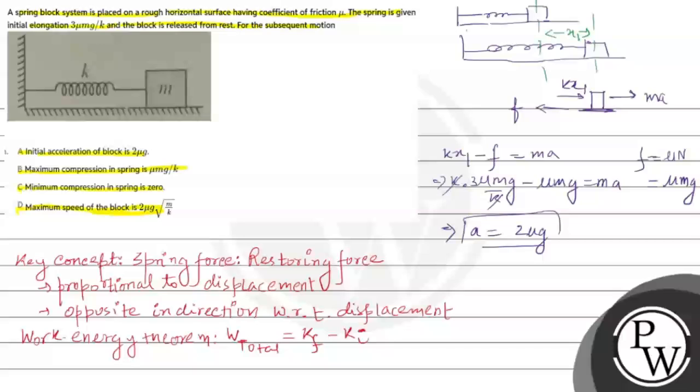So from here you can clearly say that option A is correct. Now let's see the second option, that is the maximum compression. After releasing the spring, suppose it is compressed by a distance x2.